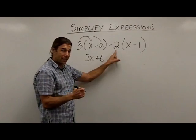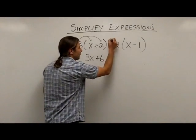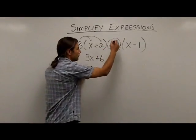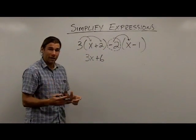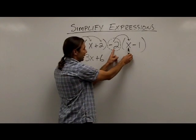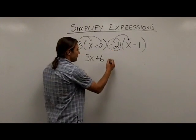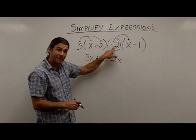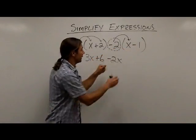Next, I'm going to distribute this negative 2. Notice the sign, I'm going to include the sign on that number. So I'm taking negative 2 times a positive x. So negative 2 times a positive x is going to give me a negative answer. And that's going to give me negative 2x.